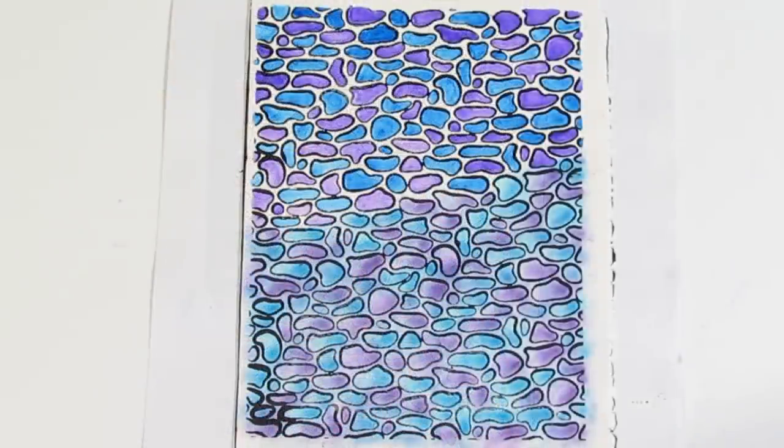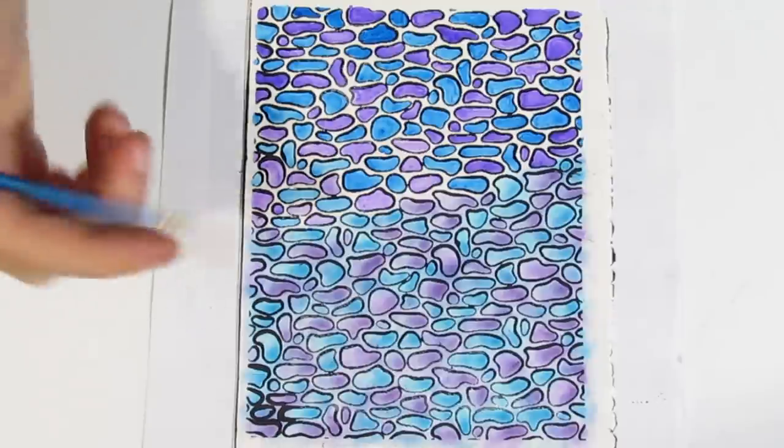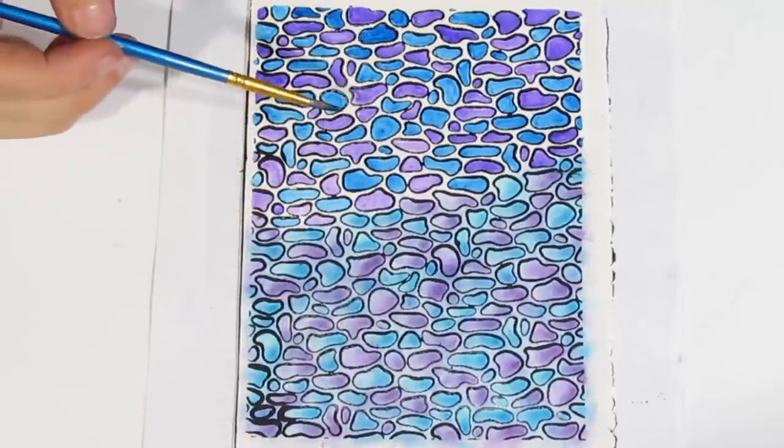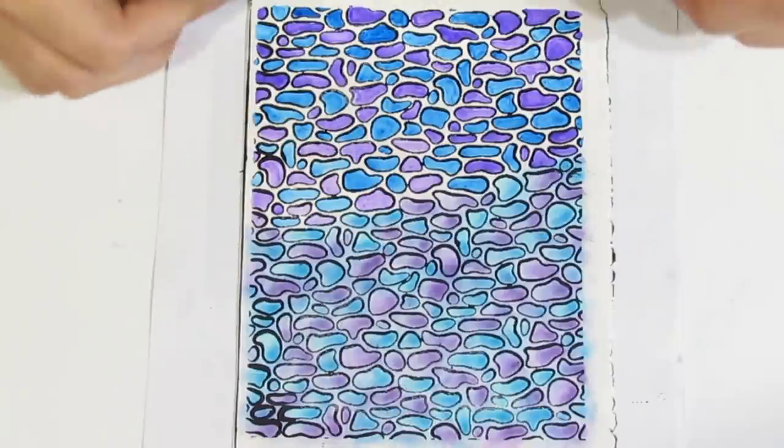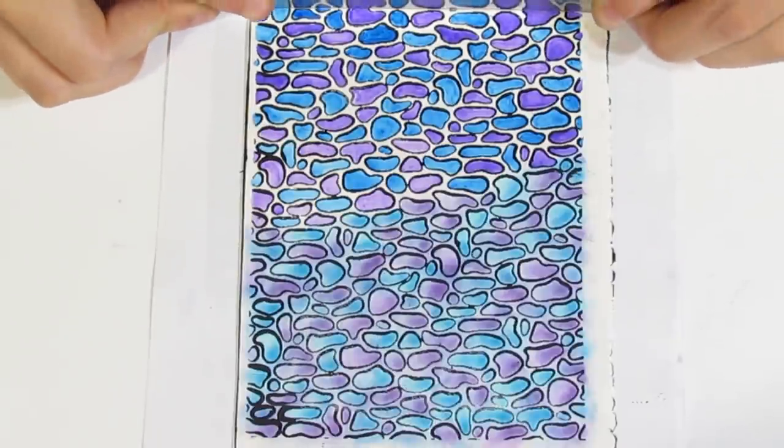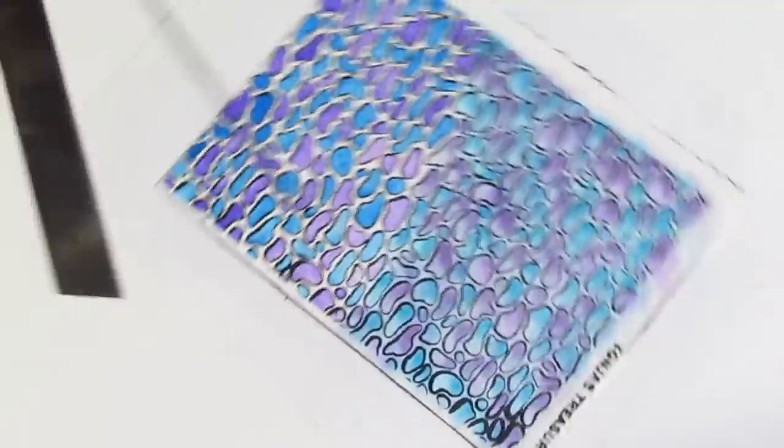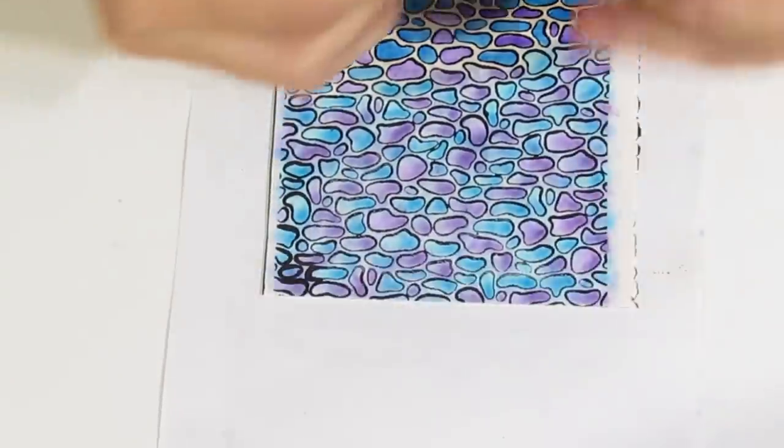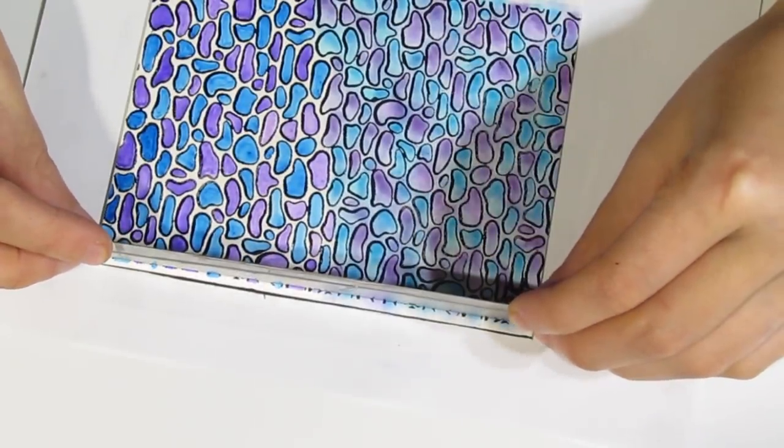And there we go. It's all finished. So you can see the two variations. This creates a more blended subtle look, which is really nice. And this will create a really vibrant striking effect. So depending on what you want, switch and change up your different techniques. So now I'm just going to quickly trim off these edges to give us one clean veneer.